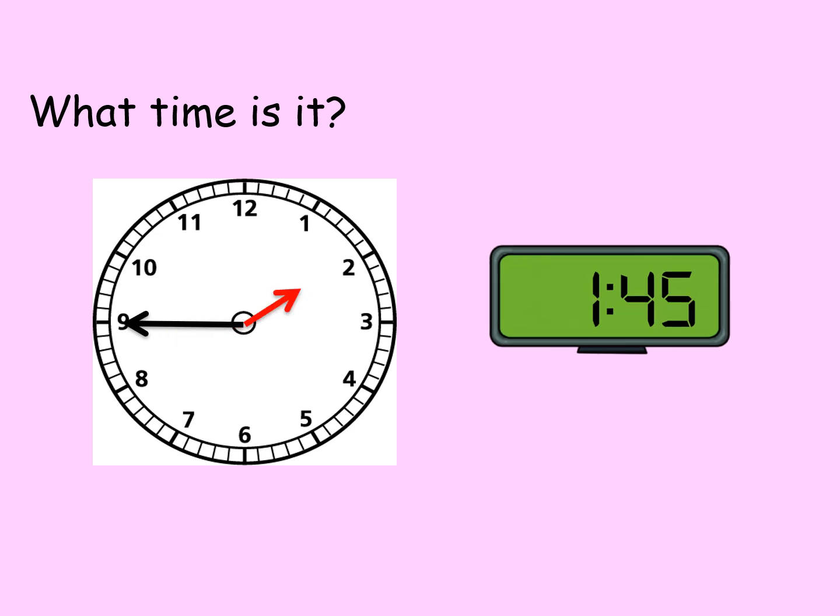What time is it? Can you see the long hand points to 9? It shows 45 minutes. The short hand is close to 2, which means it's going to 2 o'clock. 15 minutes later it will be 2 o'clock, but now we say it's quarter to 2. It means 15 minutes later it will be 2 o'clock, but not yet.